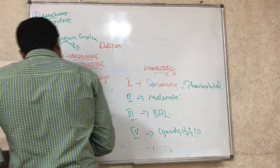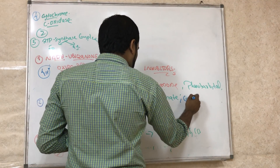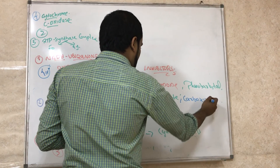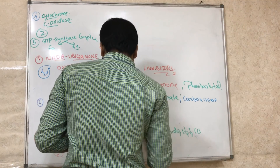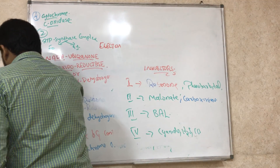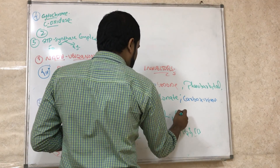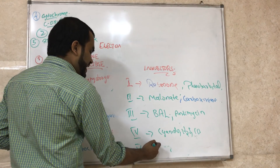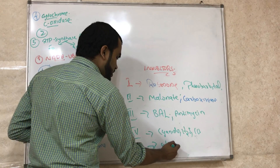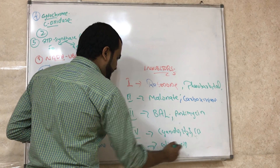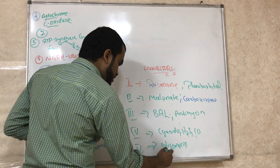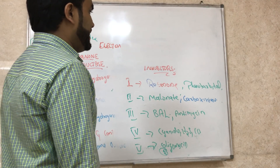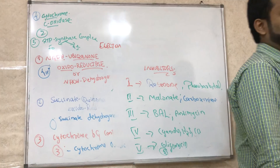Complex II is also inhibited by carboxin. Complex III is also inhibited by antimycin A. Complex V, the ATP synthase pump, is inhibited by a compound called oligomycin, which mainly inhibits the F0 particle. These are the main inhibitors of the ETC complexes.